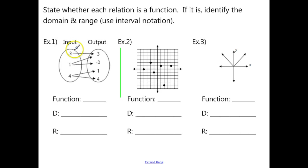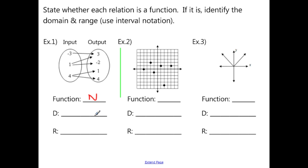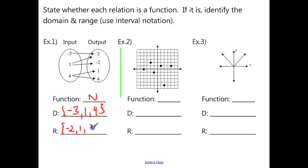The first example is a mapping diagram with x-coordinates and y-coordinates. Each x-coordinate can only go to one y-coordinate, but here the 1 has two different arrows coming out of it, meaning two different points have an x-coordinate of 1. We also have two different points with an x-coordinate of 4, so this is not a function. The domain, listed in braces, contains the set of all x-coordinates. For the range, we list the y-coordinates in braces: negative 2, 1, 3, and 4.